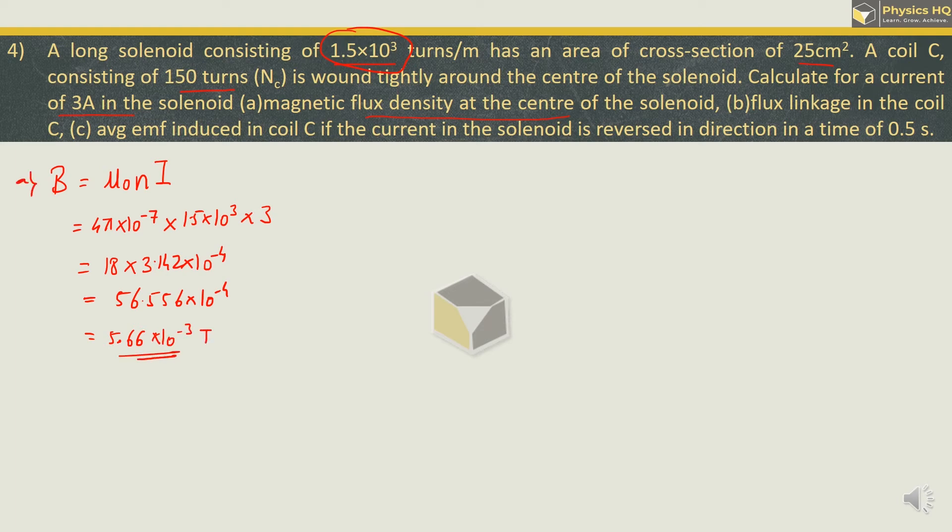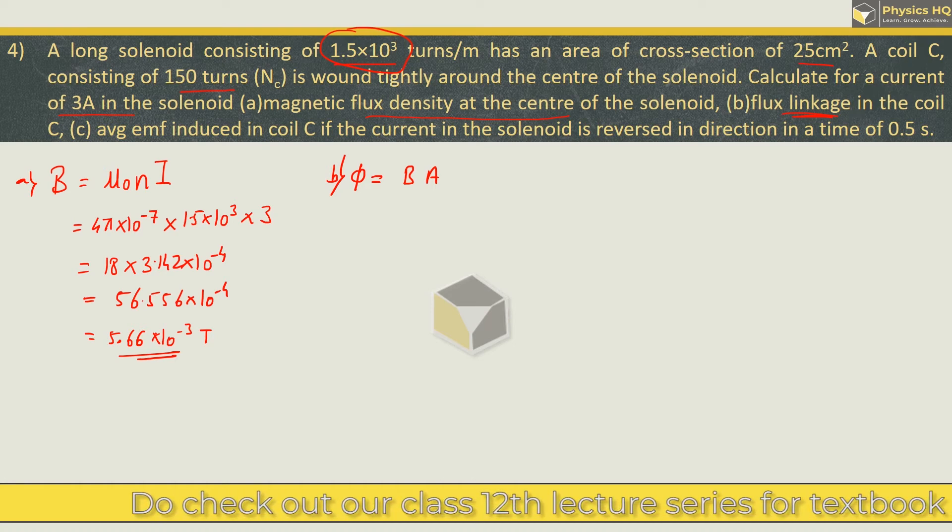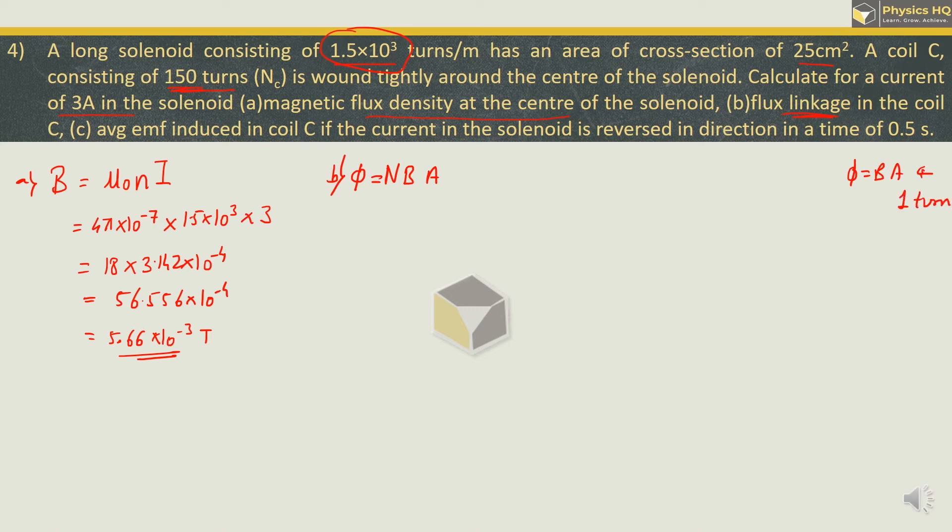Next they have asked flux linkage in the coil. Flux linkage is given by the formula magnetic field into the area of the coil. But over here we don't have single turn, we have 150 turns. So we will multiply this by the number of turns. Always remember flux equals BA is only for one turn of the coil. Over here if you have more number of turns, multiply by n. So over here we will have 150 into magnetic field we got as 5.66 into 10 raise to minus 3, into area is 25 centimeter square, we can write it as 25 into 10 raise to minus 4 meter square. After solving this we will get the answer as 2.12 into 10 raise to minus 3 Weber.